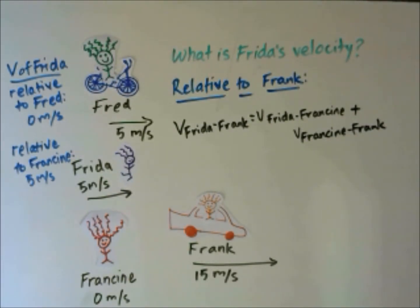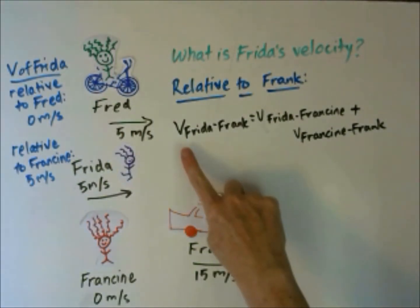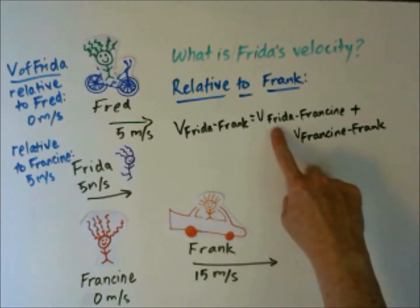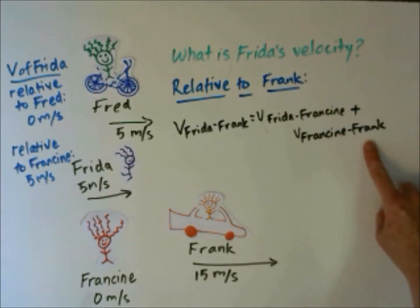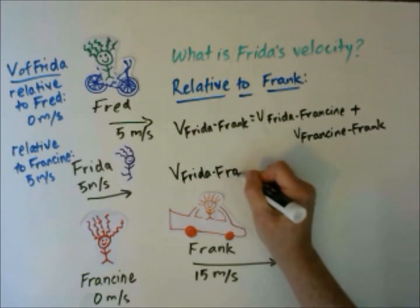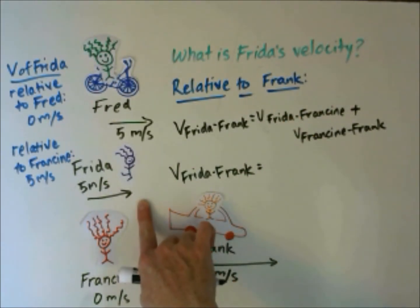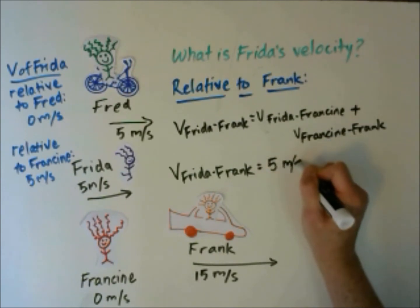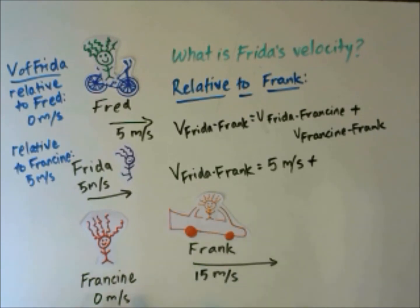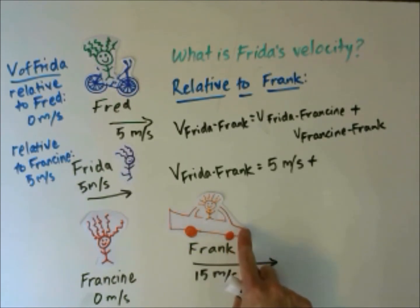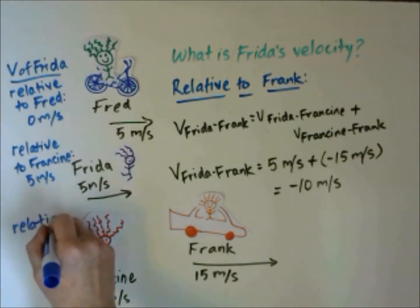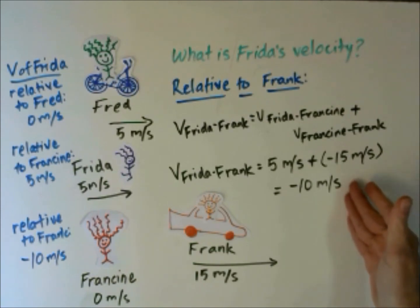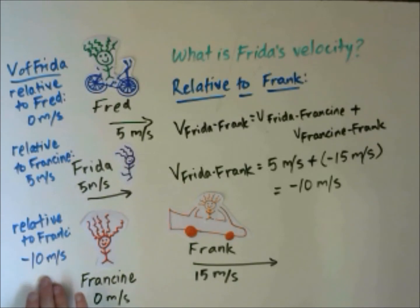To find the velocity relative to Frank, we'll use the same approach we did for Fred. The velocity of Frida relative to Frank equals the velocity of Frida relative to Francine plus the velocity of Francine relative to Frank. The velocity of Frida relative to Francine we've already determined is 5 meters per second. If you were Frank looking at Francine — Frank is moving forward at 15 meters per second, so from his perspective Francine is moving backward at negative 15 meters per second. When we add these two numbers together, we get negative 10 meters per second. The velocity of Frida relative to Frank is negative 10 meters per second.